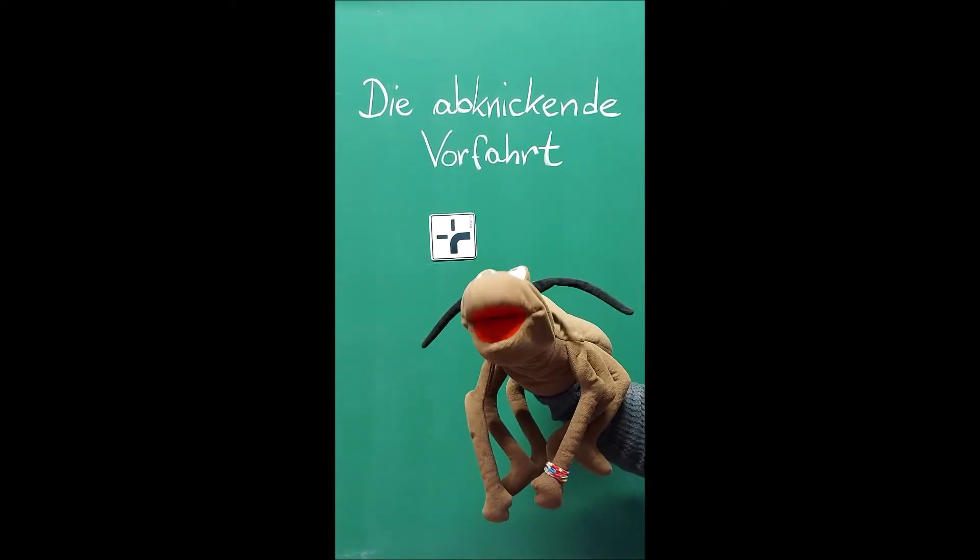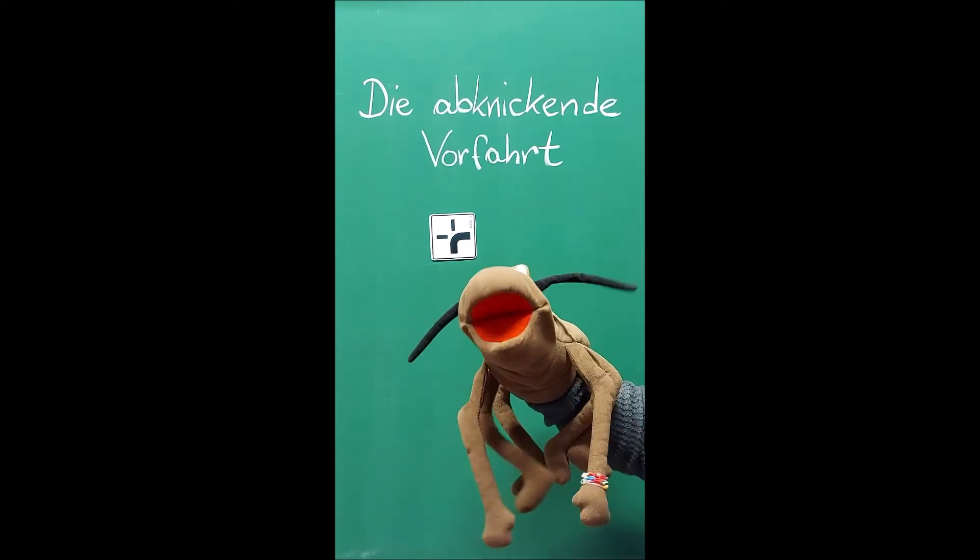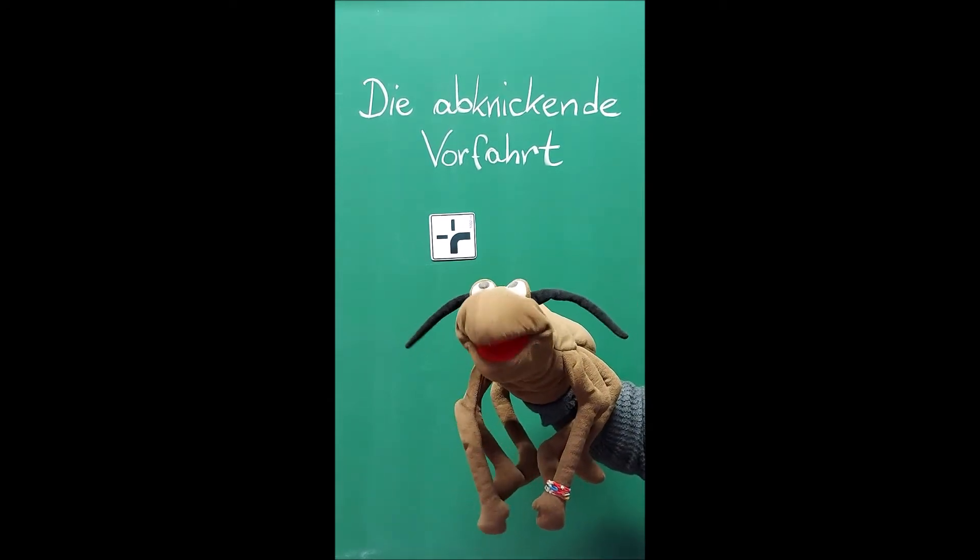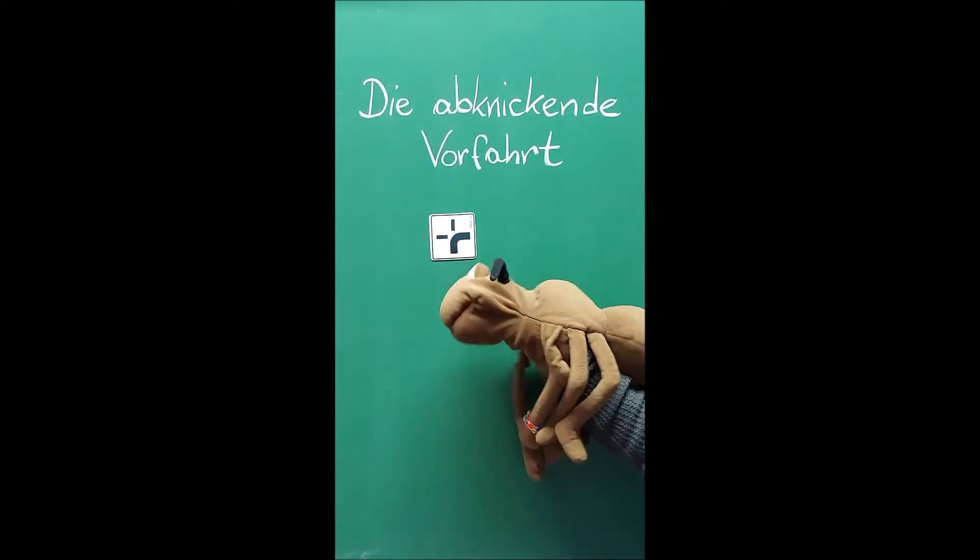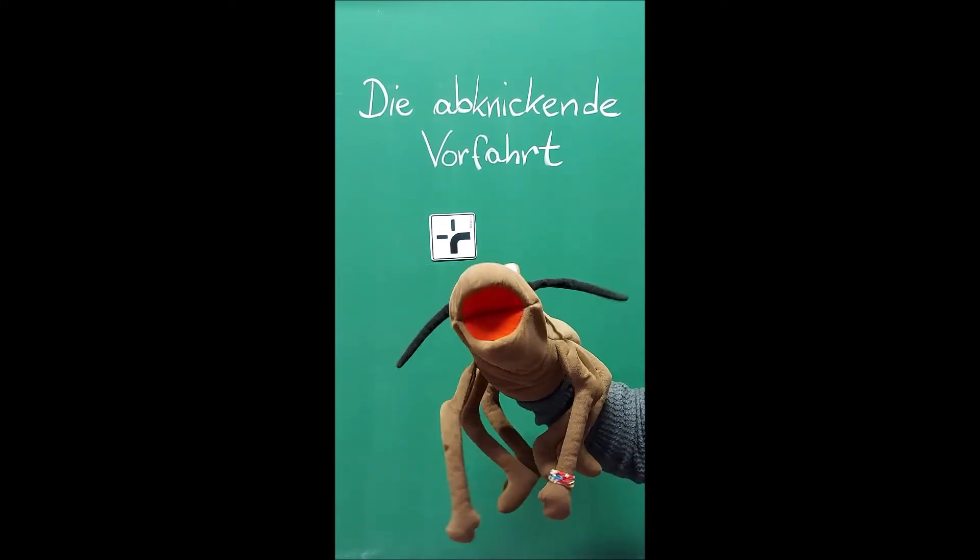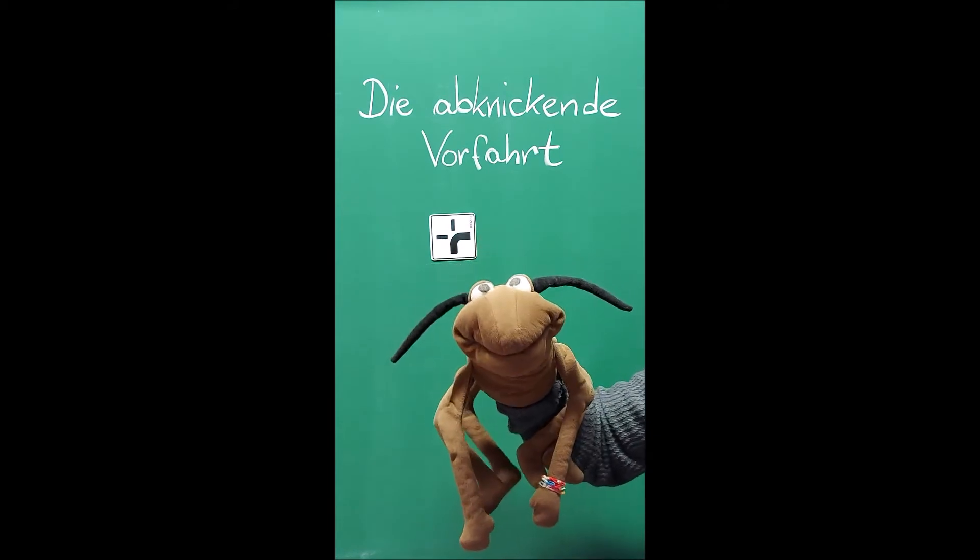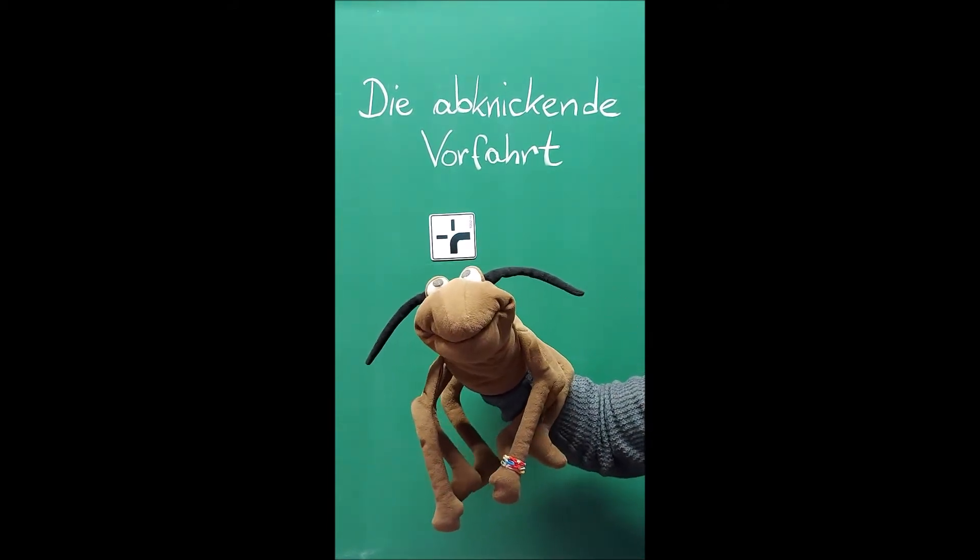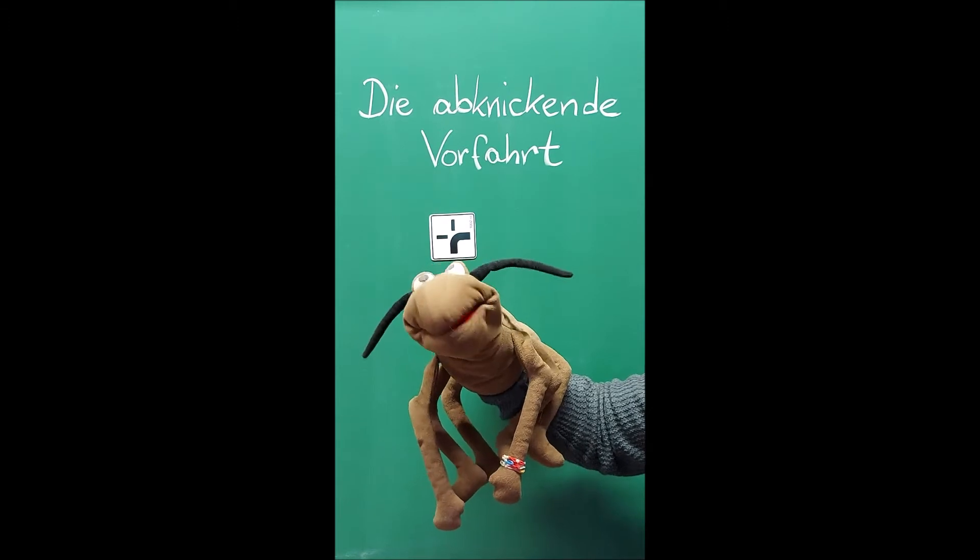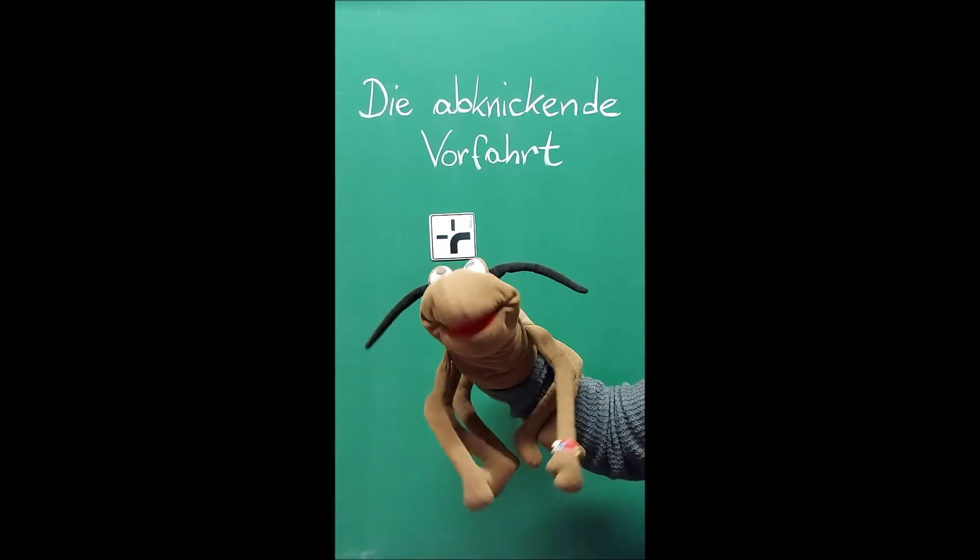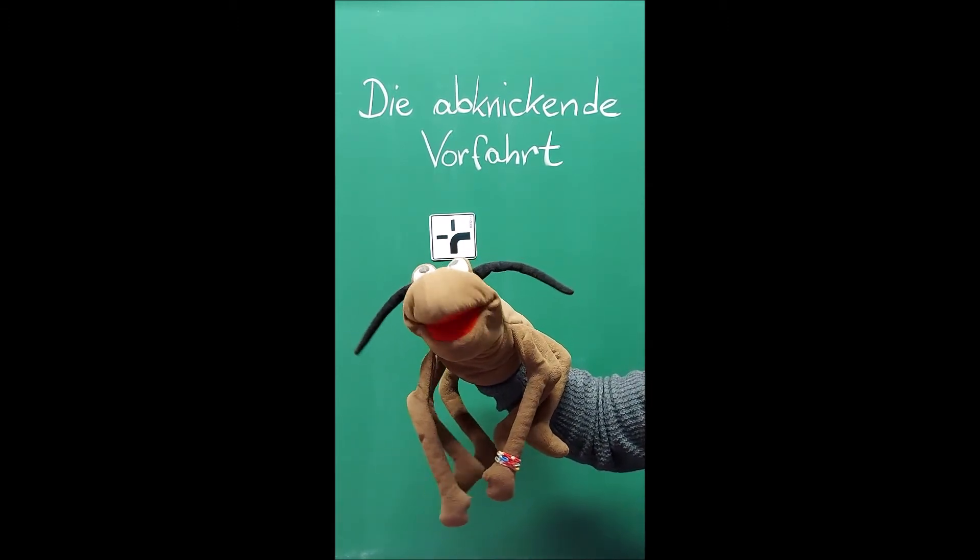Und der dicke Balken, der da so um die Ecke geht, nach rechts, der ist die Vorfahrtsstraße. Und die dünnen Balken, nach oben und nach links, das sind die Straßen, die keine Vorfahrt haben. Deswegen steht das immer zusammen mit einem Stop-Schild oder Vorfahrt-Achten-Schild bei der kleinen Straße und einem Vorfahrtsstraßen-Schild bei der großen.